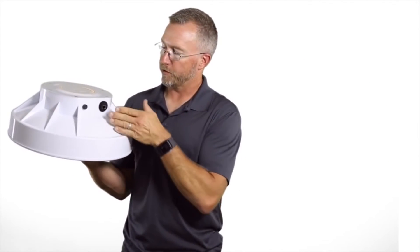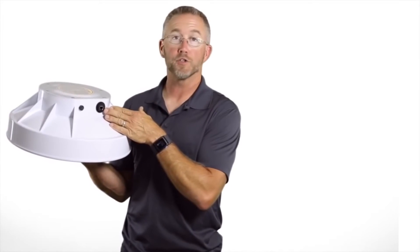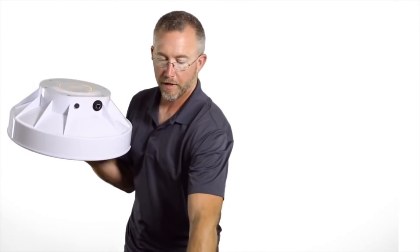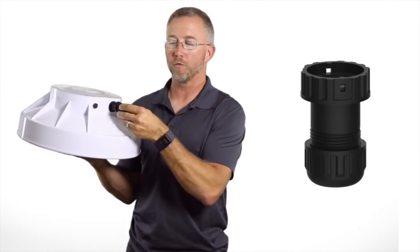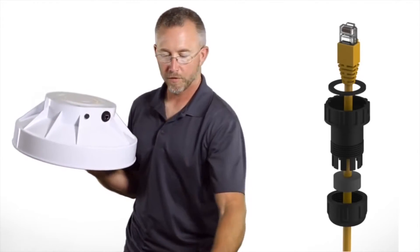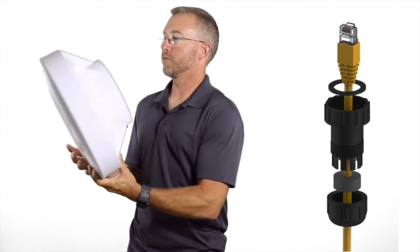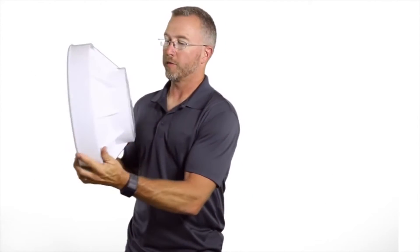The base of the unit, as you can see, has the connection for the ethernet and it has a very nice, durable boot that covers up the bottom when you do the cable attachment. And then the mounting position for the bracket is to this face of the antenna.